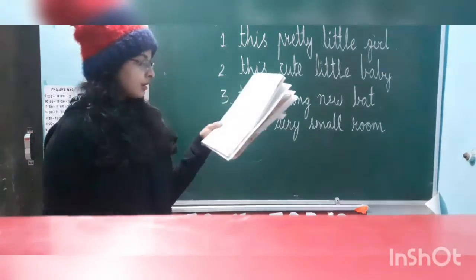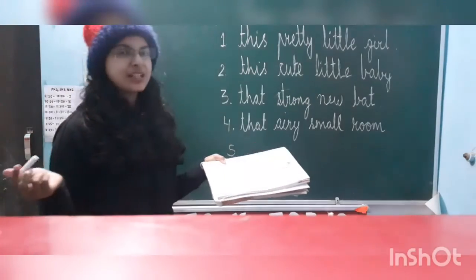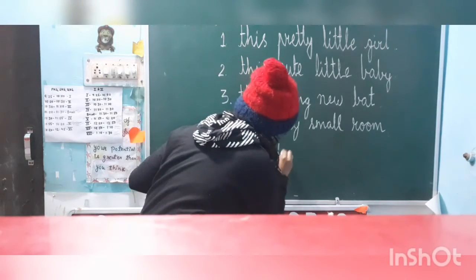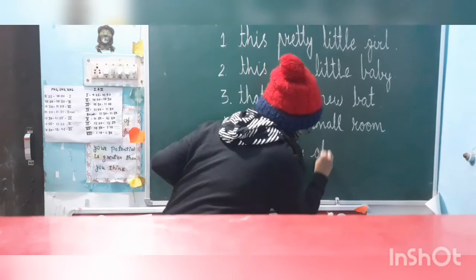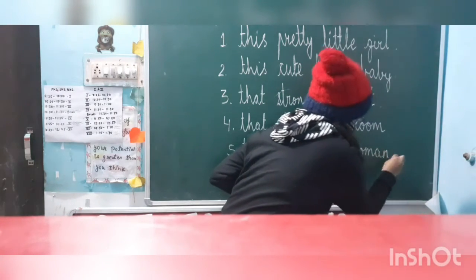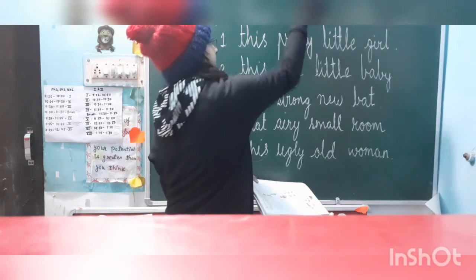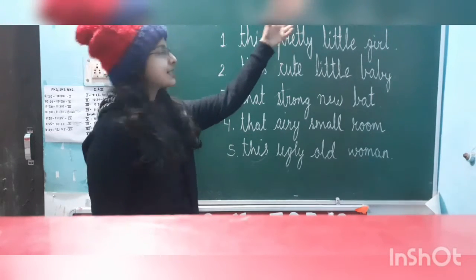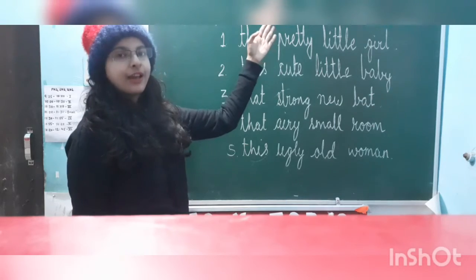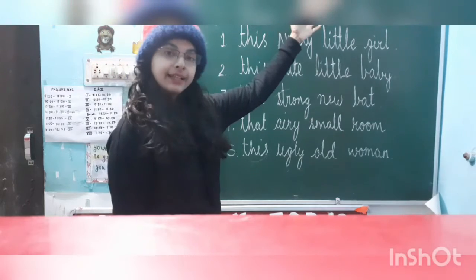Fifth one: 'These ugly old women.' The singular of 'these' is 'this,' so we write 'this.' Ugly and old remain the same. Now we change 'women' into 'woman' — note this carefully: W-O-M-A-N. One thing to note down: the spelling is W-O-M-E-N for women and W-O-M-A-N for woman.